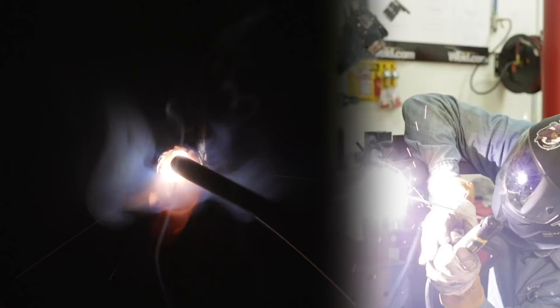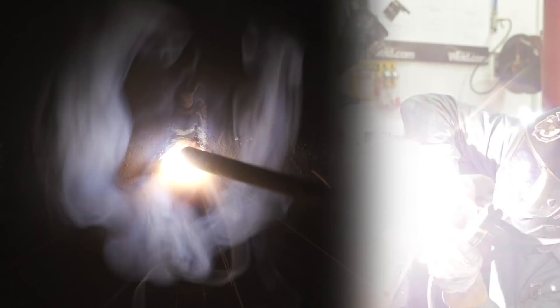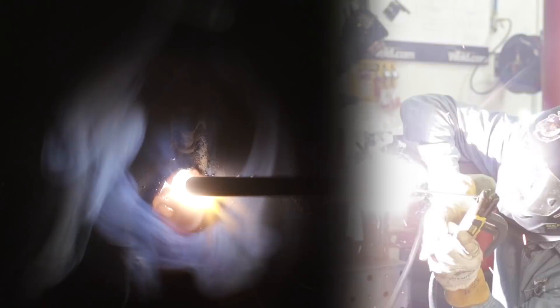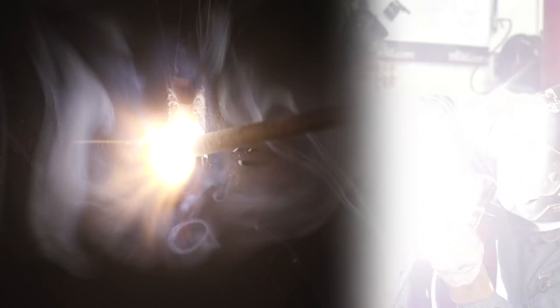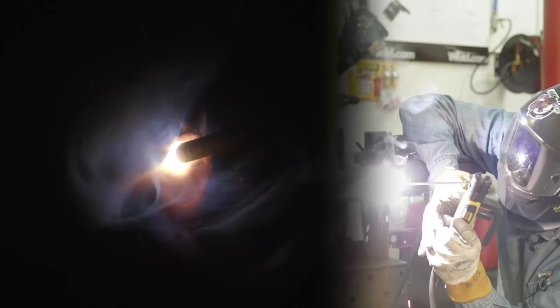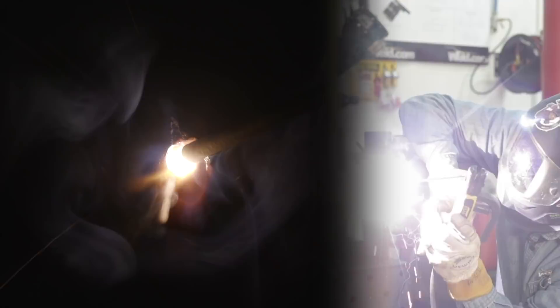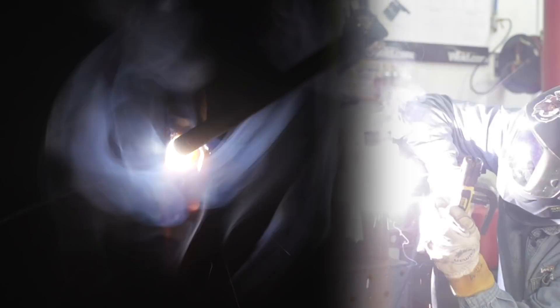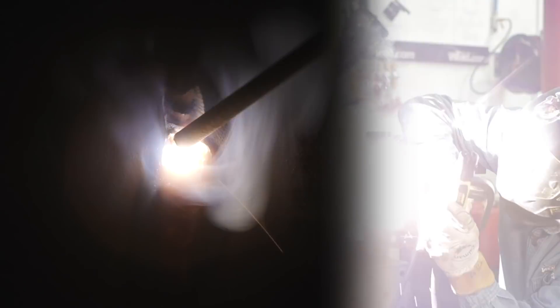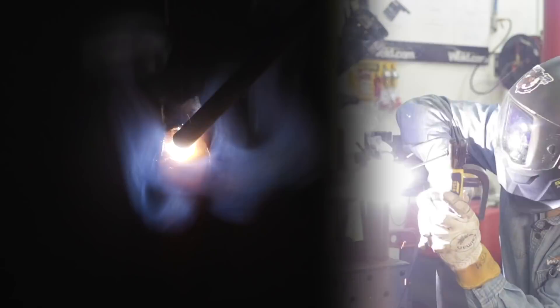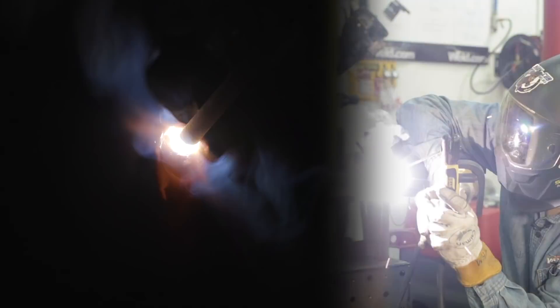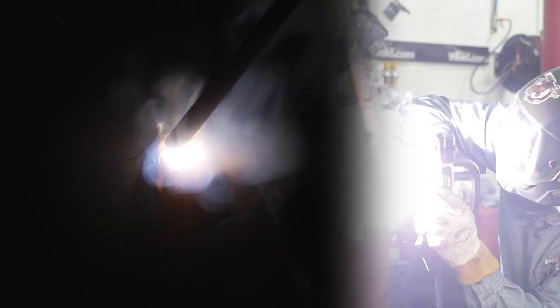I didn't grind anything except for one of the starts down here when I did that hot pass fill. Basically, I just knocked the slag off of it. It's at the depth that I want. I did make a machine change. I turned my machine down another three amps or so. The pipe's already hot, so I went ahead and turned the machine down just a little bit.